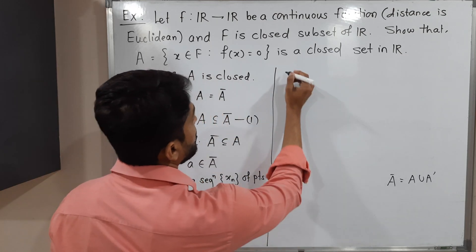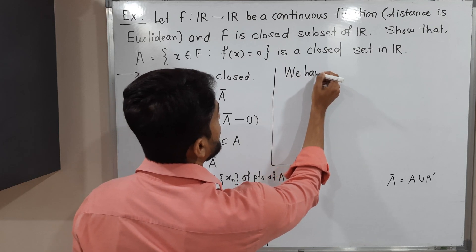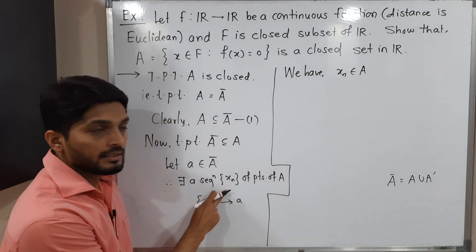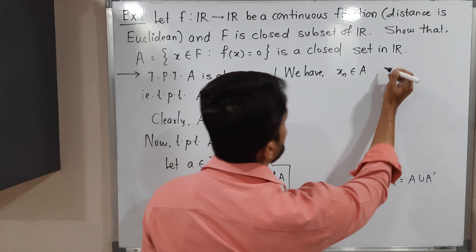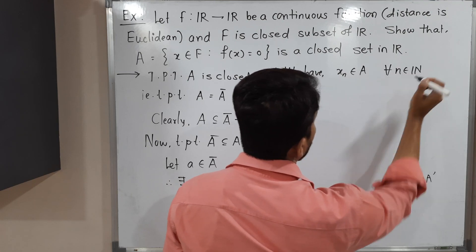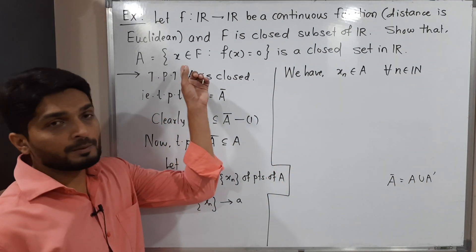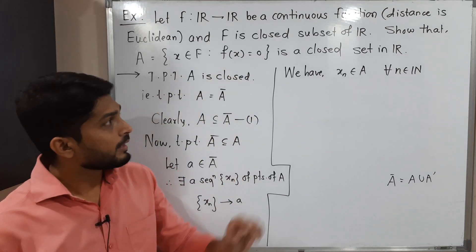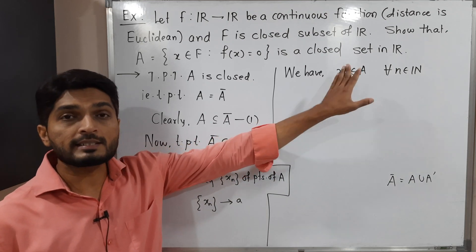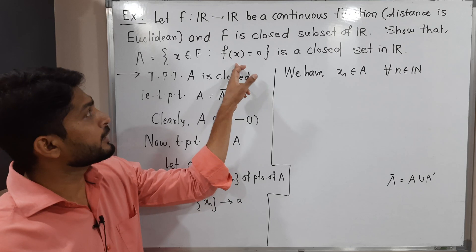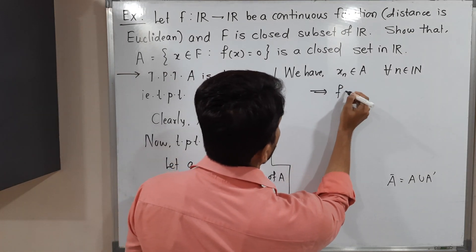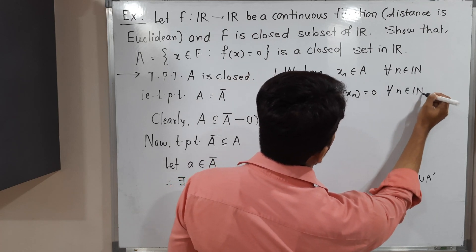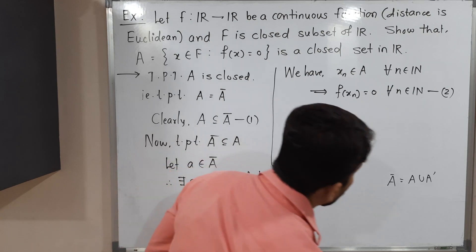The important thing is xₙ belongs to A, since xₙ is a sequence of points of A. So xₙ ∈ A for all n ∈ ℕ. But what is the definition of A? It requires x ∈ F and f(x) = 0. So since xₙ belongs to A, xₙ satisfies the condition of A. By the condition of A, we can write f(xₙ) = 0 for all n ∈ ℕ. Let me call this statement 2.